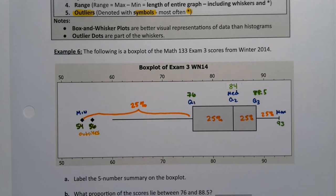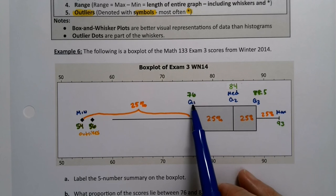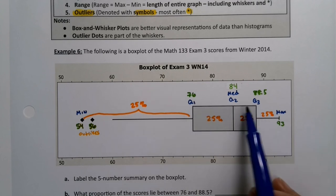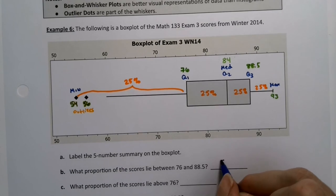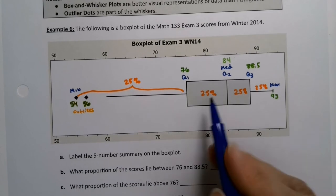All right, so let's see here: What proportion of the scores lie between 76 and 88.5? 76 is right here, 88.5 is right here, so 25% and 25%, which would make 50%. 50% lie from that line to that line.